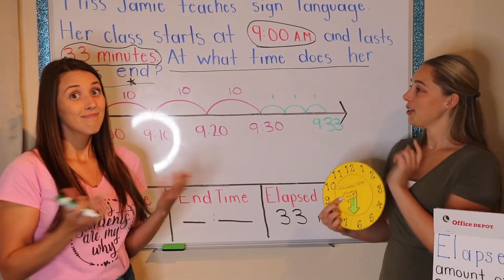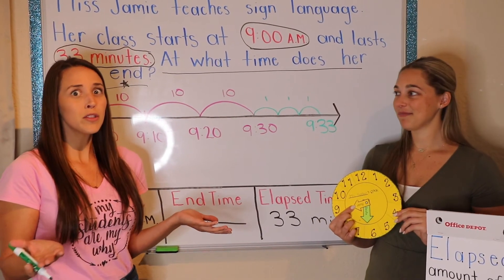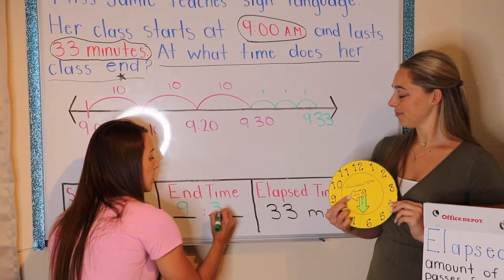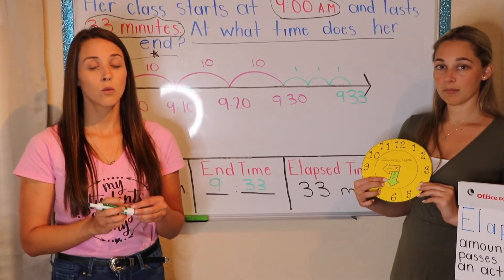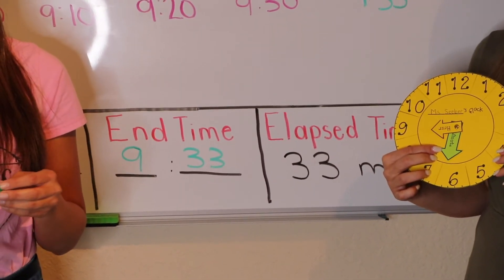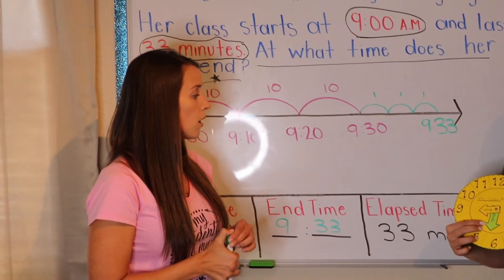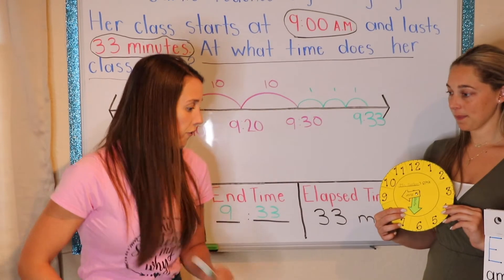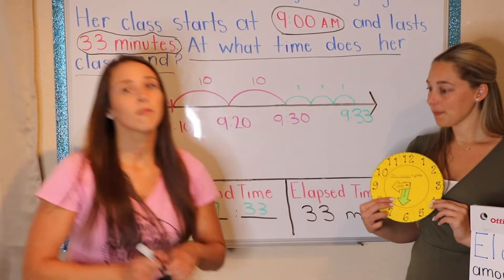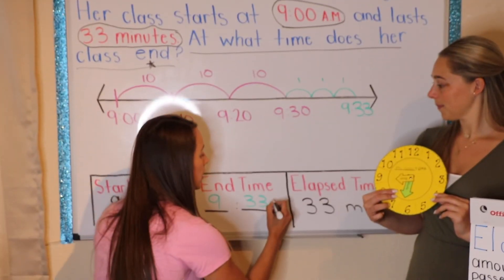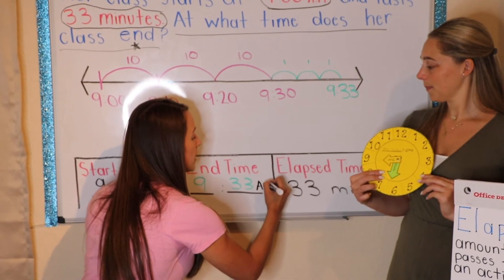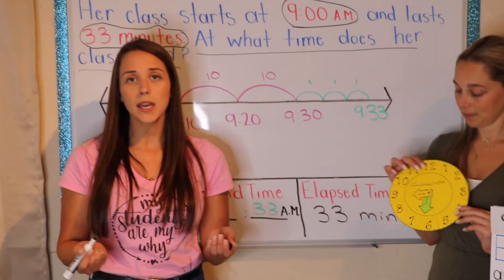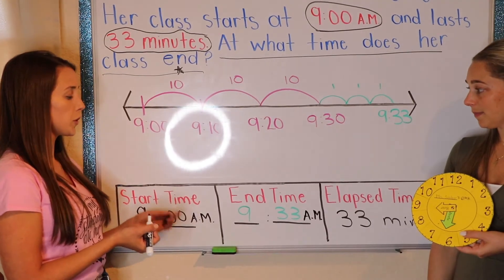What was my end time? 9:33. Easy peasy, lemon squeezy! What did I forget? PM or AM. Oh my goodness, you are such a stickler with that, and I love you for it. I got my handy-dandy black marker. 9:33 AM. Because if it was PM, that would be way more than just 33 minutes.